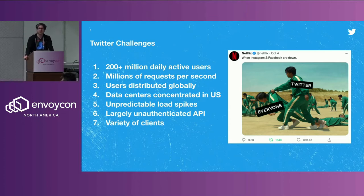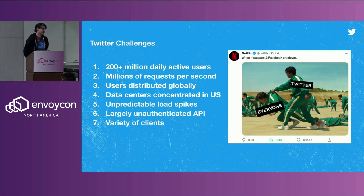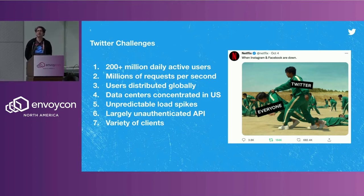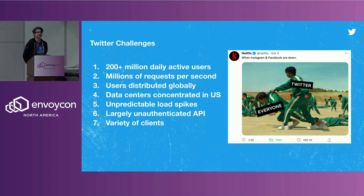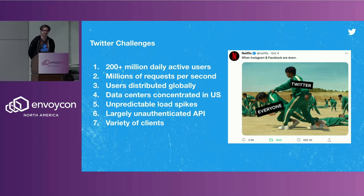To make matters worse, those users are geographically distributed. Despite our data centers primarily being located in the US, our user base is growing much more rapidly in other parts of the world with less good internet connections, and yet we have to manage to make a service that's both responsive and reliable for all of our users globally. We have to deal with unpredictable load spikes. Some are more predictable — for example, every New Year's at exactly midnight there'll be a huge load spike in Japan, just because people tend to queue up tweets and send them all at once. That has caused us grief in the past and we've learned to adapt to that one.